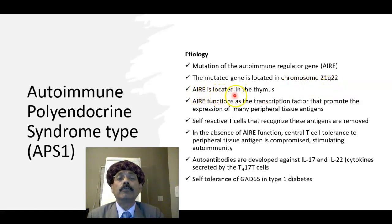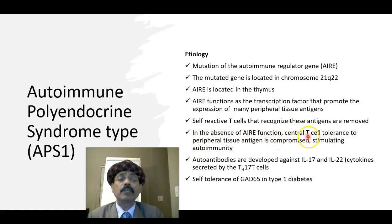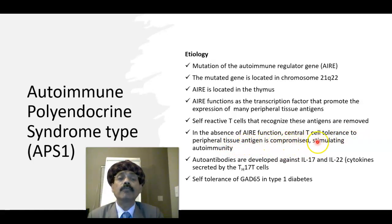AIRE is located in the thymus and functions as a transcription factor that promotes the expression of many peripheral tissue antigens. Self-reactive T cells that recognize these antigens are removed. In the absence of AIRE function, central T cell tolerance to peripheral tissue antigens is compromised, stimulating autoimmunity.